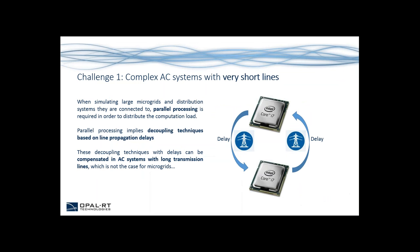The first challenge related to power systems is the fact that there are complex AC systems with very short lines that need to be simulated in real-time. When simulating large microgrids and distribution systems, parallel processing is required to distribute the computation load. Parallel processing necessarily implies using decoupling techniques based on line propagation delays, but long transmission lines — which compensate these delays — are typically not available in microgrids.